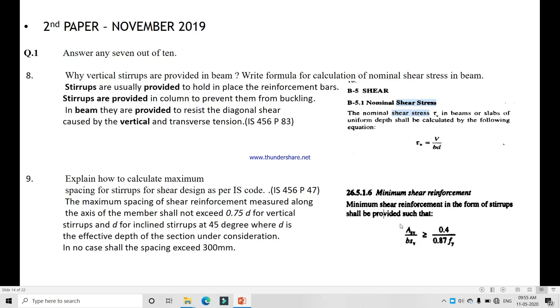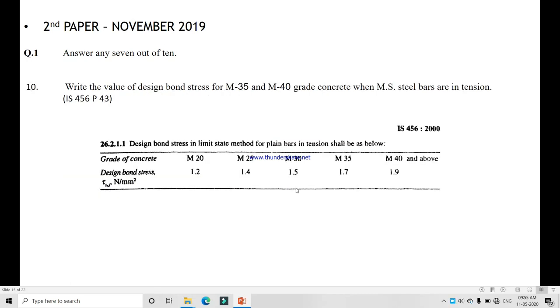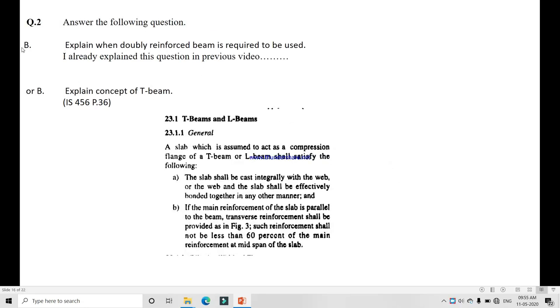Question 1.10: Write the value of design bond stress for M35 and M40 grade of concrete when MS steel bars are in tension. They clearly use FE250 grade, so we no need to multiply by 60% and this is the tension bar, so no need to multiply with any value. You directly write M35 and M40 value from here.